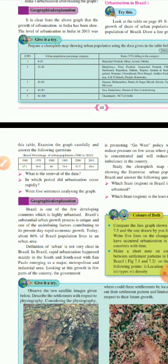This is your activity — you are supposed to do it by yourself. It is very important. What is the interval of data? In which period did urbanization occur rapidly? Write five sentences analyzing the graph. The first answer is: the interval of data is 10 years.